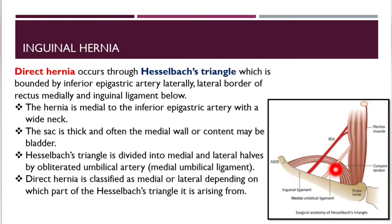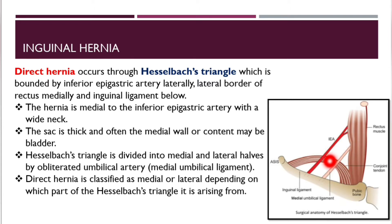The hernia will come through this medial position. The sac is thick and the medial content may be the bladder. Hesselbach's triangle is divided into medial and lateral parts by the medial umbilical ligament, which is a remnant of the obliterated umbilical artery. Accordingly, direct inguinal hernia can be classified as medial or lateral depending on which part of Hesselbach's triangle it arises from.